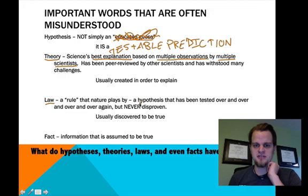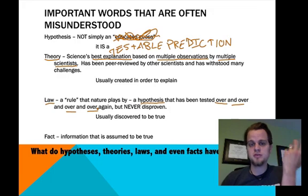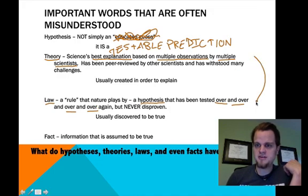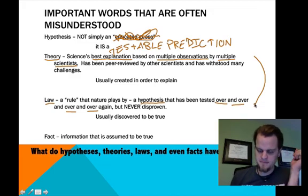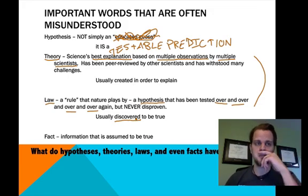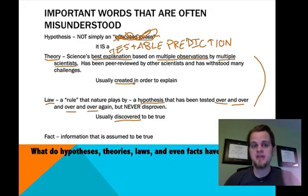A law starts as a hypothesis — something somebody discovered — and it has been tested over and over and over again and never been disproven. That's the key with Newton's laws. A lot of people get theory and law mixed up. Laws are typically discovered, like discovering the rules of cricket or baseball. Whereas a theory is created in order to explain — like explaining how to play baseball the best possible way. A law explains how; a theory explains why.